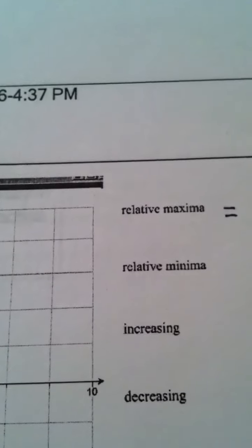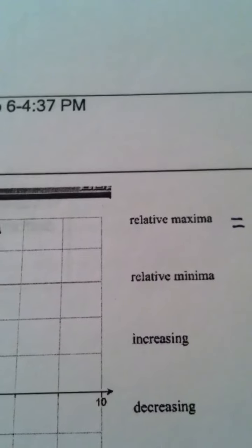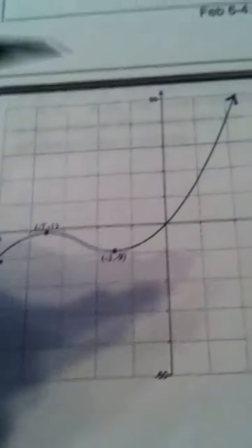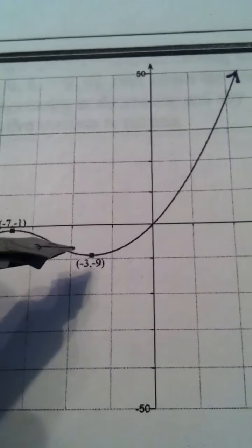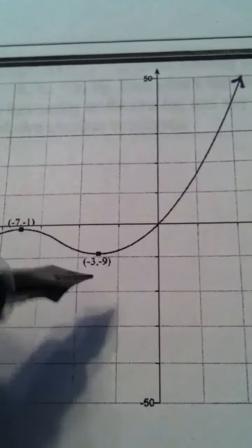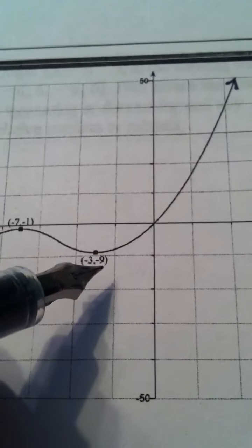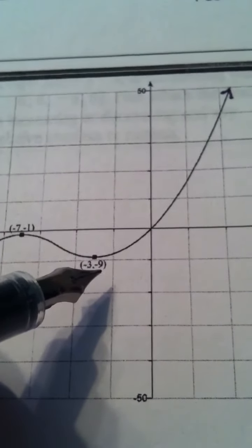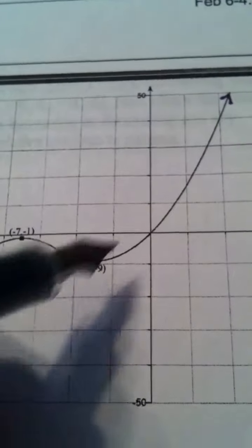Relative minimum, or minima if there's more than one valley, but there's only one valley here. The relative minima, in this case minimum, is the number negative 9, because that's the y value in the bottom of my valley.